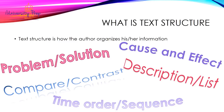First off, what is text structure? Text structure is how the author organizes his or her information. They could organize it in a problem-solution manner, compare and contrast, time order, description, or cause and effect. We're going to look at all five of these today and see what they are and how we can determine what way the author organized his or her information.